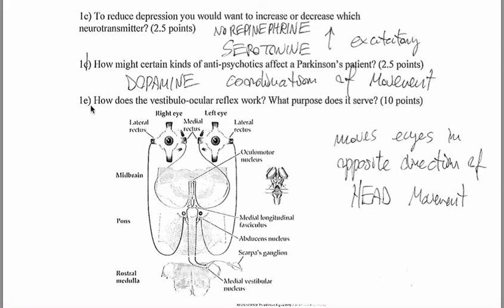Final question, 1E of the first question, how does the vestibulo-ocular reflex work and what purpose does it serve? So, the main point here is that it moves the eyes in the opposite direction of the head movement and if you have time you could explain exactly how that is done by using the vestibular neurons that basically pair up with the opposite side of the eyes muscles and move the eyes in the opposite direction.